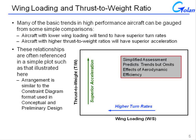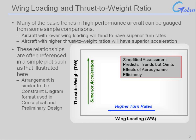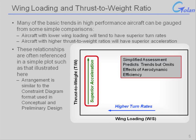For first-order approximations, quite often what will be done is aircraft will be judged on the basis of their thrust-to-weight ratio and their wing loading, very similar to the constraint diagrams that we saw before. In this kind of relationship, higher turn rate corresponds to lower wing loading, and superior acceleration corresponds to higher thrust-to-weight ratio.